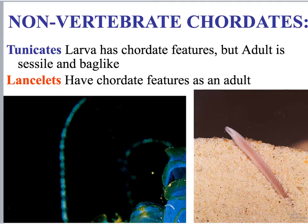The tunicates, interestingly, as babies are very motile — they can move around — but when they become adults, they become sessile, meaning stationary; sessile and bag-like. The lancelets are kind of the reverse: they have chordate features as adults, so their features are more like chordates as adults, as opposed to the tunicates.